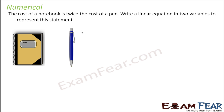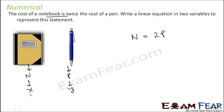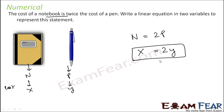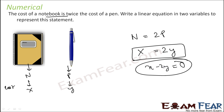Let's take a word problem: the cost of a notebook is twice the cost of a pen. Let the cost of the notebook be x and the cost of the pen be y. Then x equals 2y, which can be written as x minus 2y equals 0. This is the linear equation in two variables representing the statement.